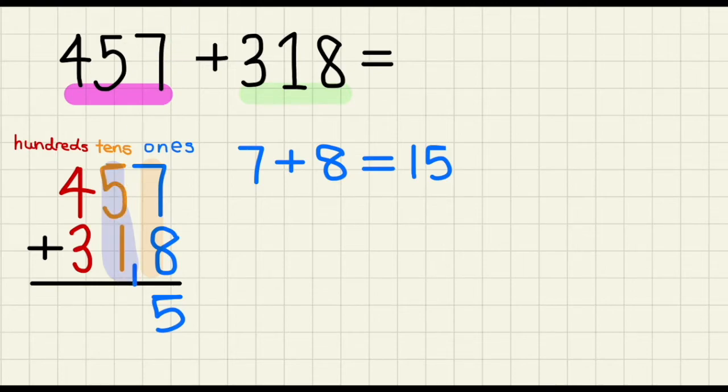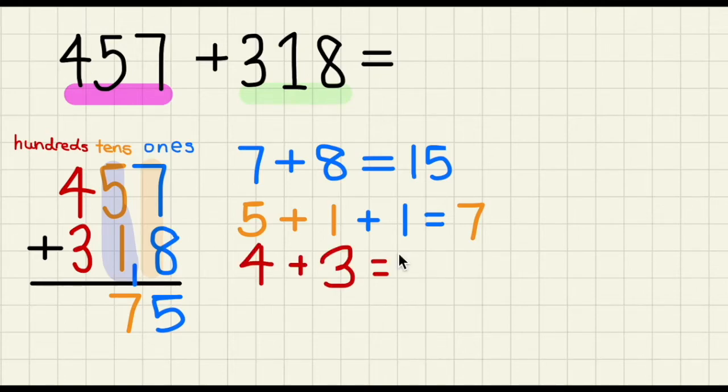So instead of just adding 5 plus 1, we would have to add another 1. So 5 plus 1 plus 1 to get the tens place answer, which is 7. Now all we have to do is to add the hundreds place together, which is 4 plus 3. Do you know what 4 plus 3 is? That's correct, it is 7. So let's write 7 in our hundreds place. And our final answer for 457 plus 318 is 775.